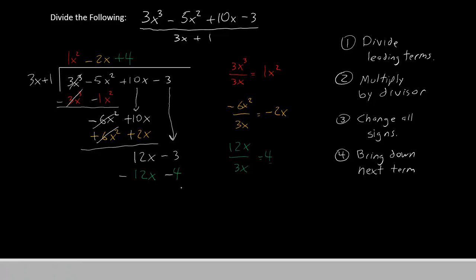We have negative 12x and negative 4. 12x minus 12x cancels out. Negative 3 minus 4 gives us negative 7. We have no more terms to bring down, so we must stop now and call negative 7 our remainder.